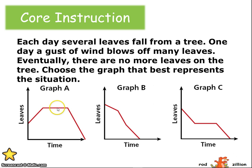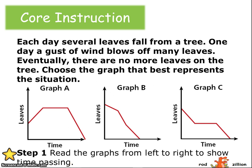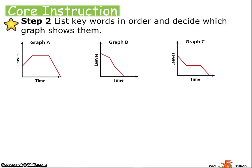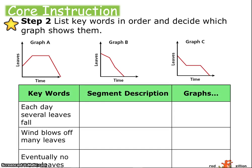Time is still elapsing, but the number of leaves is not changing. We're going to first read the graphs from left to right to show time passing. We understand what's happening in the graphs here. Then we're going to list keywords in order to decide which graph shows them. In the passage, it mentions that each day several leaves fall.